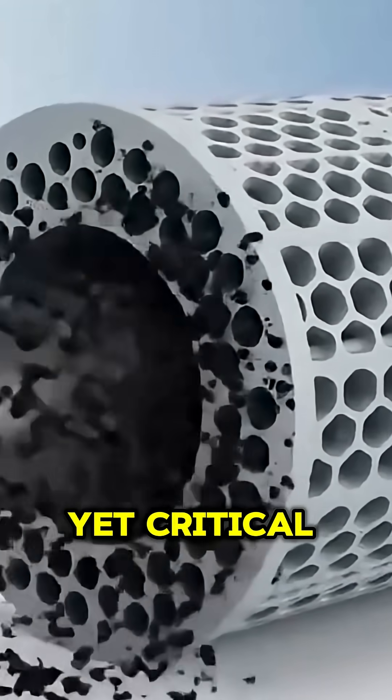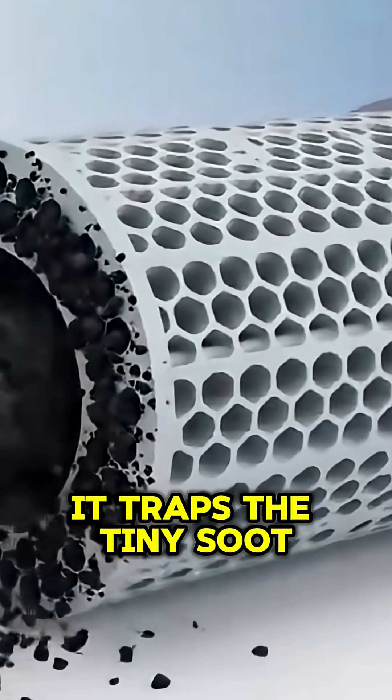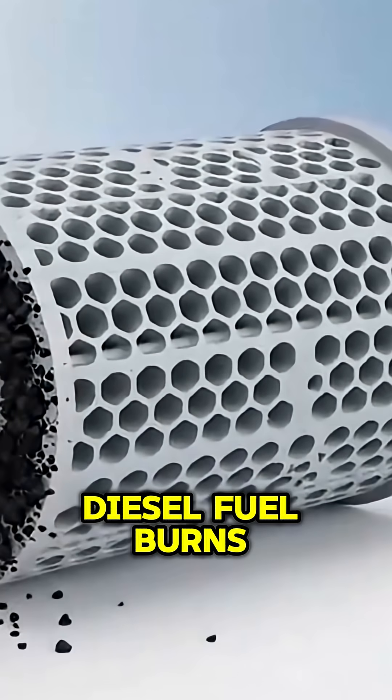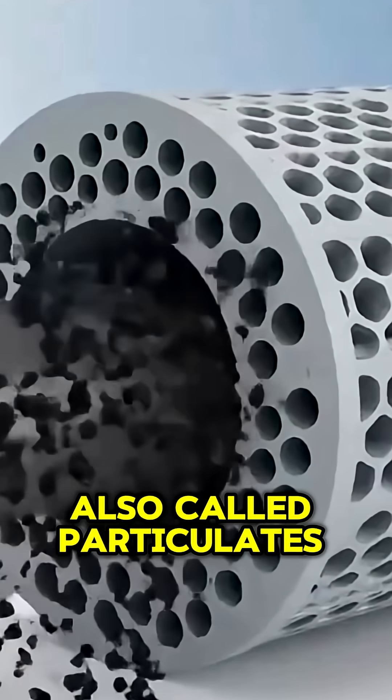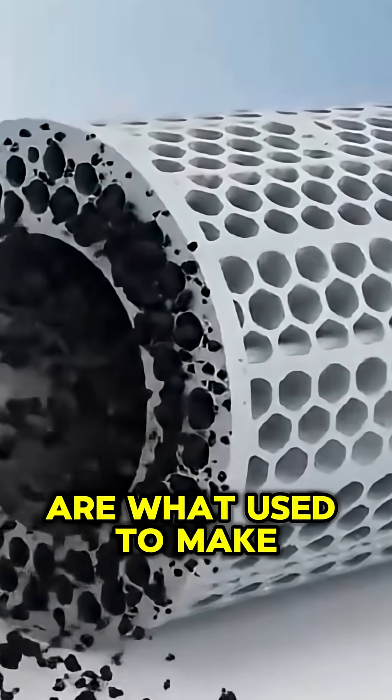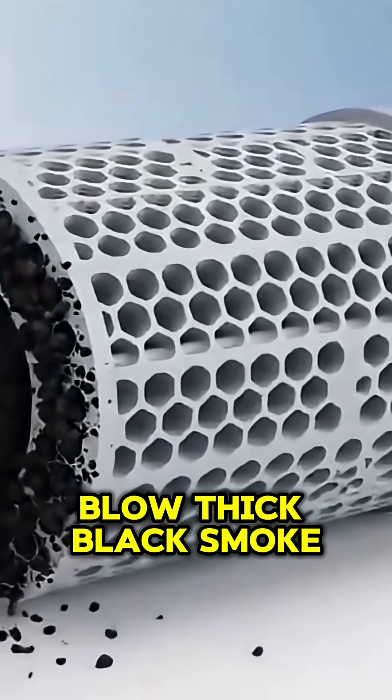Its job is simple, yet critical. It traps the tiny soot particles that are produced every time diesel fuel burns. These particles, also called particulates, are what used to make old diesel engines blow thick black smoke from the exhaust.